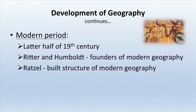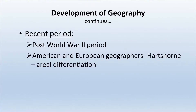The modern period began in the later 19th century. Ritter and Humboldt are considered the founders of modern geography, and Ratzel built the structure of modern geography during this time. The recent period began after World War II, when American and European geographers flourished. Hartshorne was one of the most eminent geographers of this period, known for his concept of aerial differentiation, which forms the basis of regional geography today.